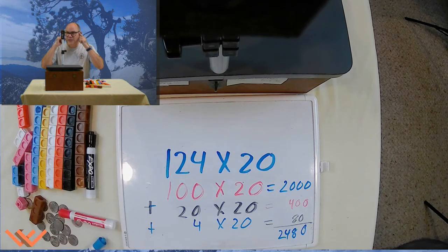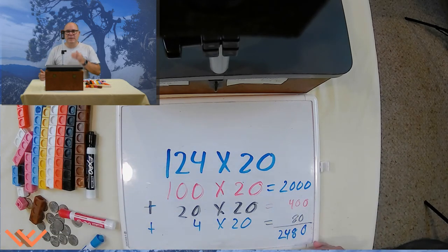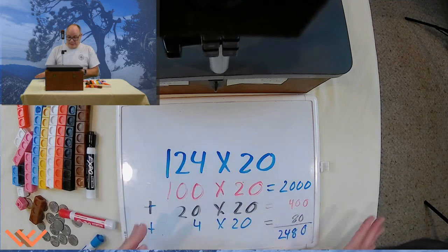See how we're thinking smart. We're breaking it down. We're getting partial products, and then we're adding it up. Break down your multiplication problems to make it easy for you. Eventually, you're going to be able to do it much faster and more easily rather than breaking it down all like this.